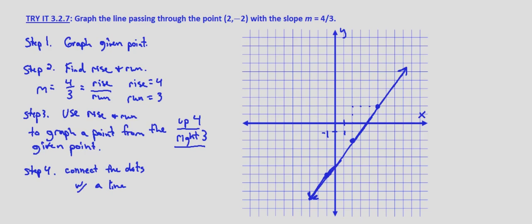Or if we go from our point 5, 2, if we go up 4 and over 3, it does go through that point as well, which verifies that we have graphed the correct line.